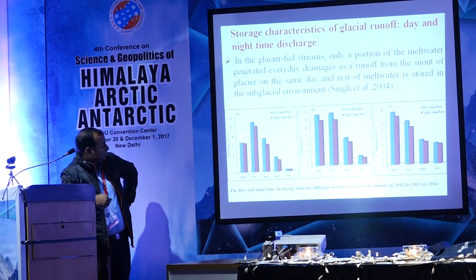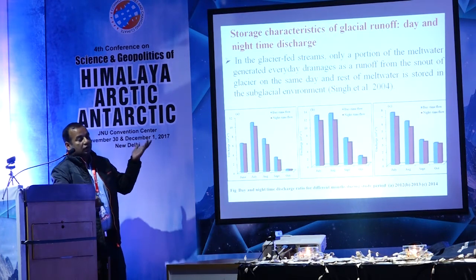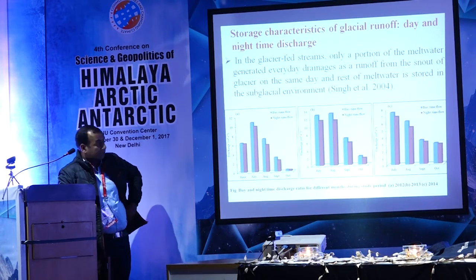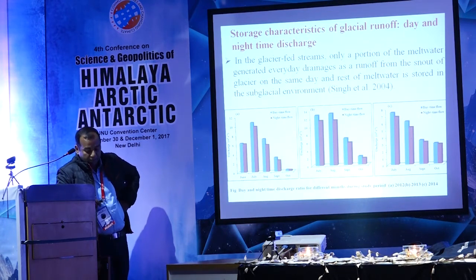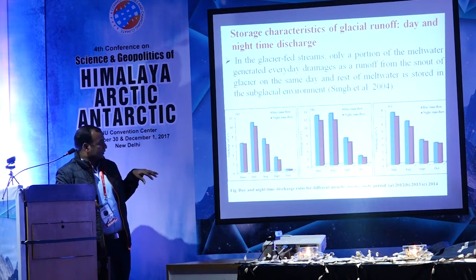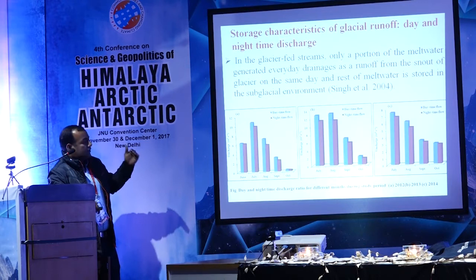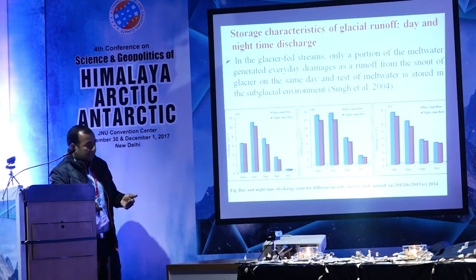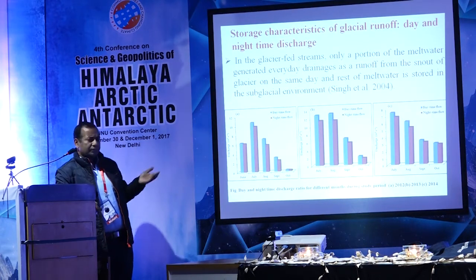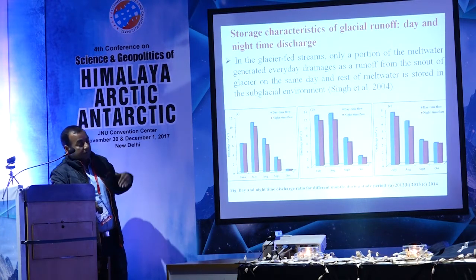Why is this trend found at the beginning of the melt period? Because there is a lot of seasonal snow cover present over the surface of the glacier at the start of the melt season. Besides this, the strength of the subglacial drainage network is also low during the beginning of the melt period. That is why we found strong storage characteristics during the beginning of the melt period.